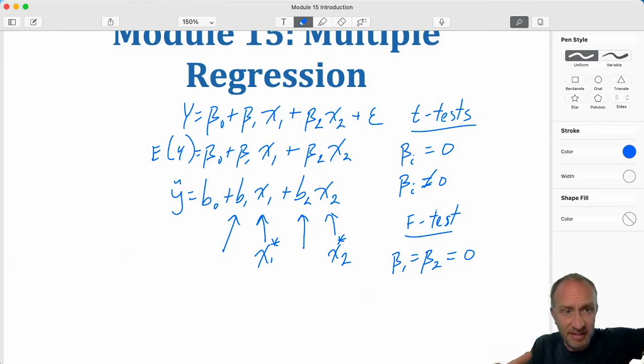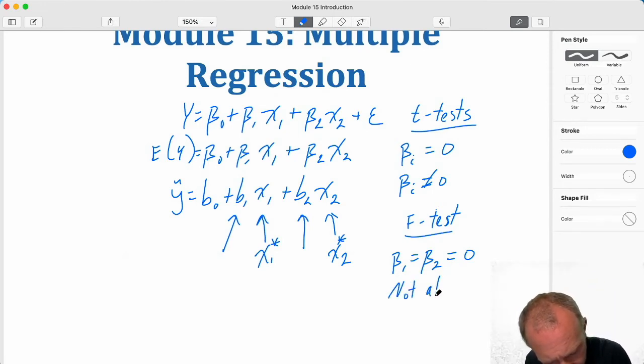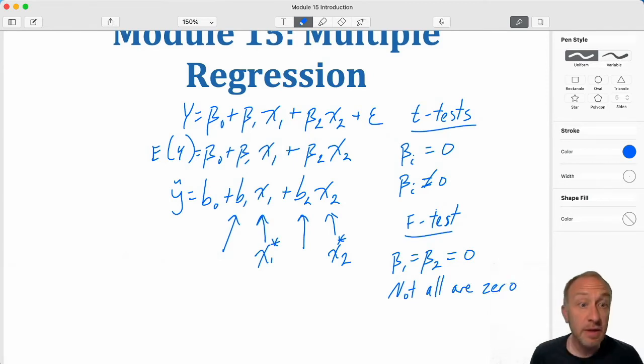If I had 3, 4, 5, 6, 10, 20, 30, the f-test would include all of those coefficients. And the alternative, not all are zero. So again you can see a lot of what we've already covered in module 14, it all carries through.